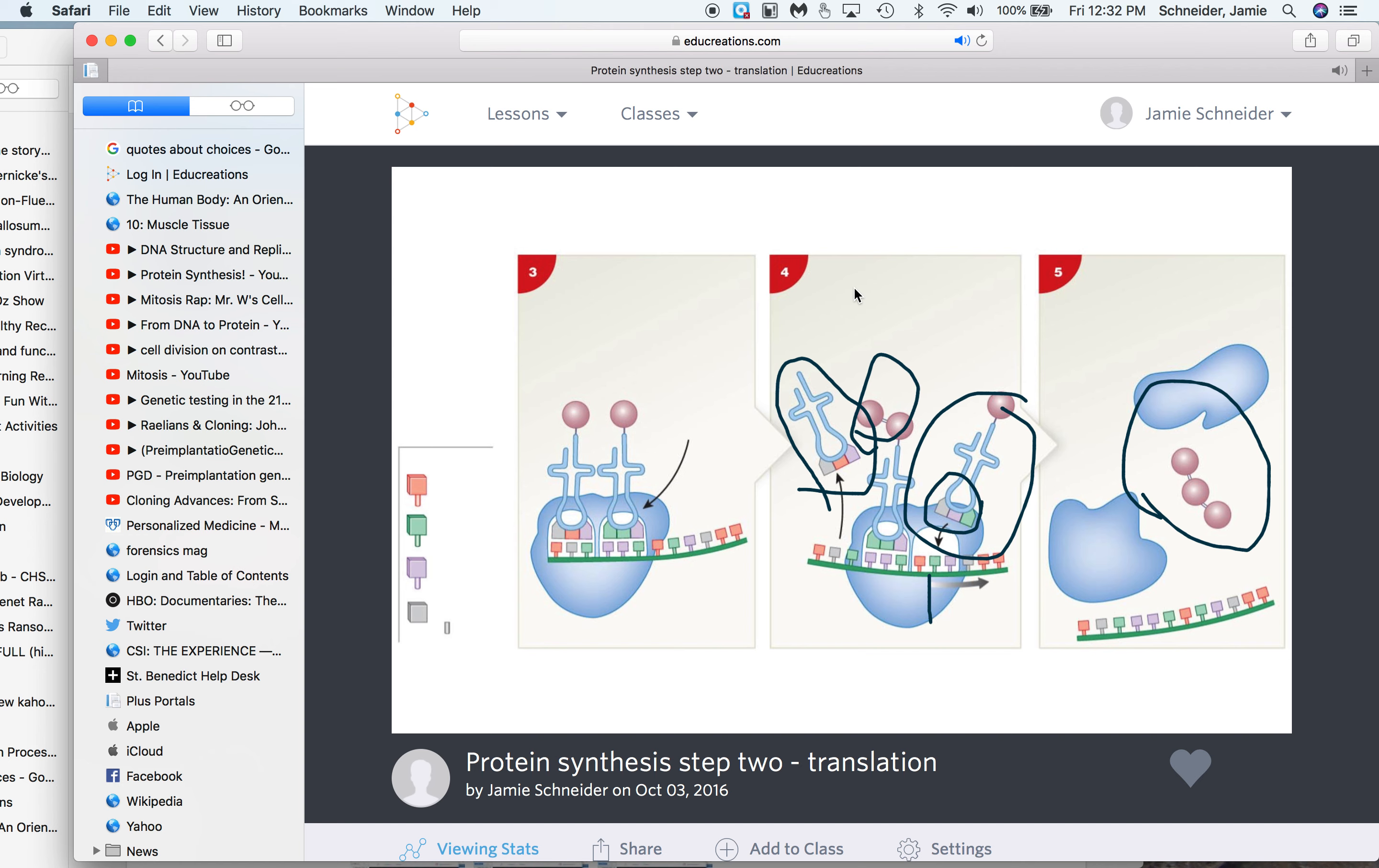This all starts with a start codon on the mRNA right here, which is AUG, and it continues until it hits a stop codon at the end of the messenger RNA, which is in the genetic code.